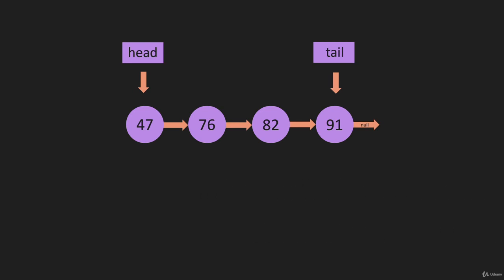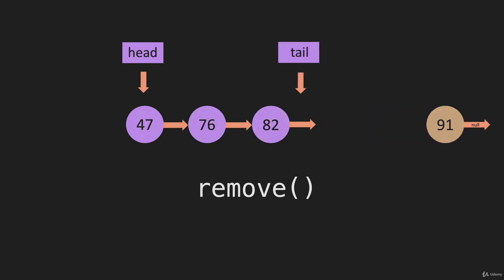What about if we're going to remove? Same thing. If we were going to remove the node with the value of 91, we're going to have to iterate through the linked list like that. And that's O of N. Binary search tree is going to be log N.